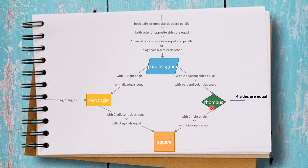Let's look at the diagonal properties across these shapes. In a parallelogram, the diagonals only bisect each other. In a rhombus, the diagonals bisect each other and are perpendicular. In a rectangle, the diagonals bisect each other and are equal. In a square, all three properties hold: the diagonals bisect each other, are equal, and are perpendicular.